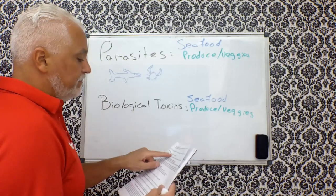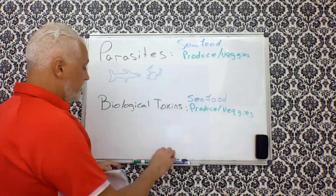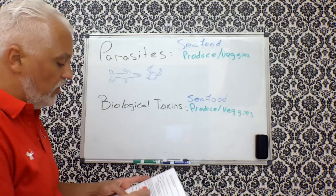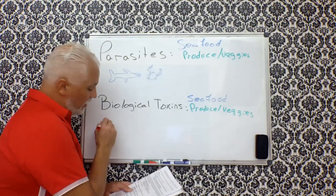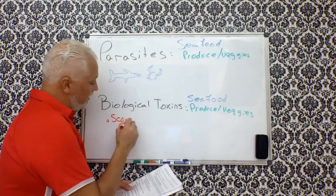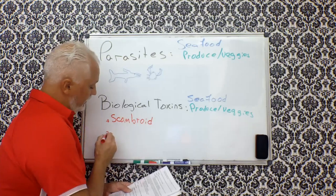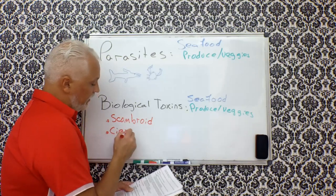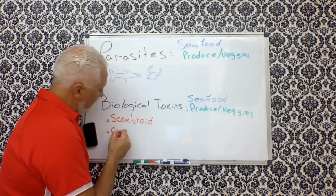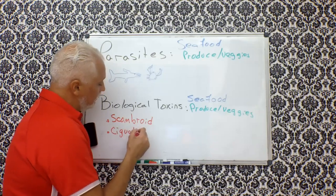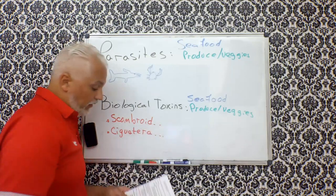So parasites. Let me break away over here for just a second. Because with the biological toxins, I want you to get familiarization with these two words, or these two types of toxins. Under seafood toxins, you've got scombroid, S-C-O-M-B-R-O-I-D. And then you've got ciguatera, which sounds like cigarette.